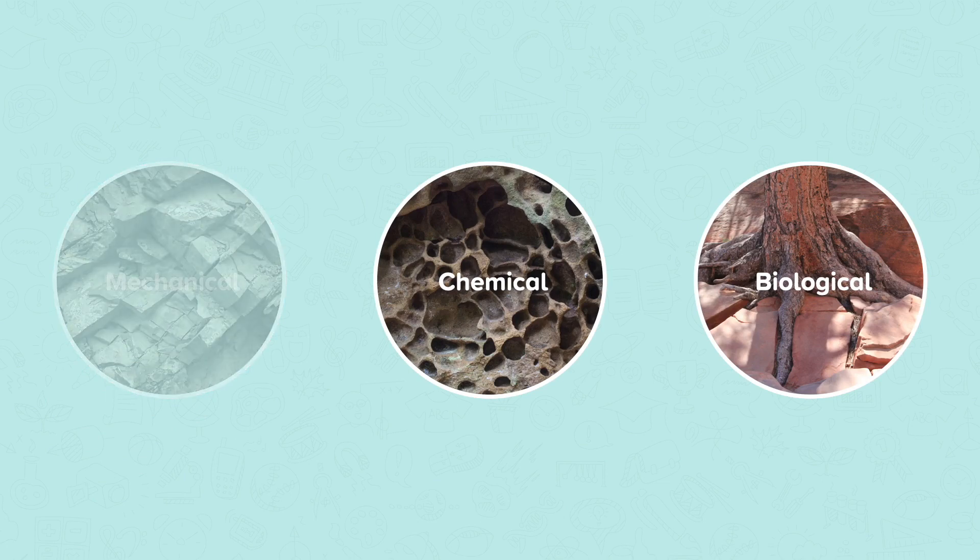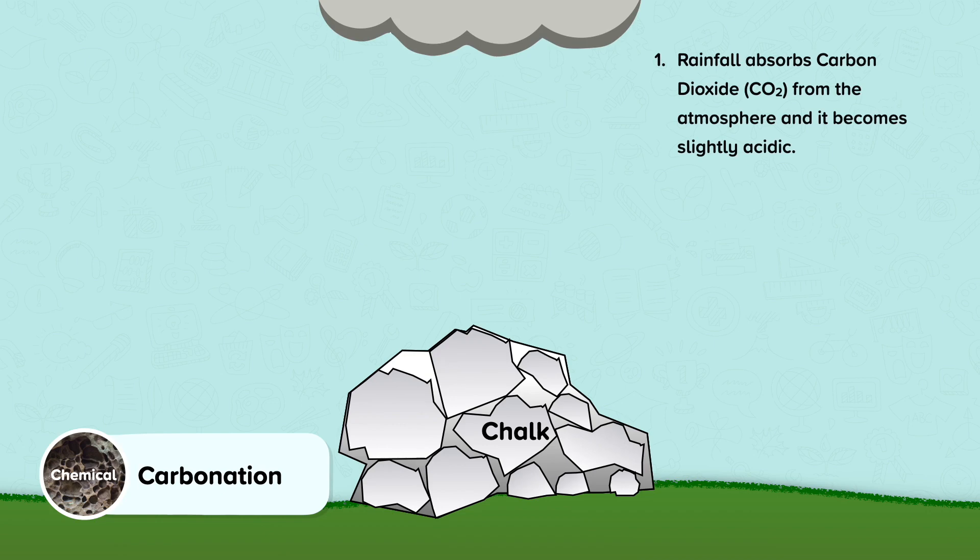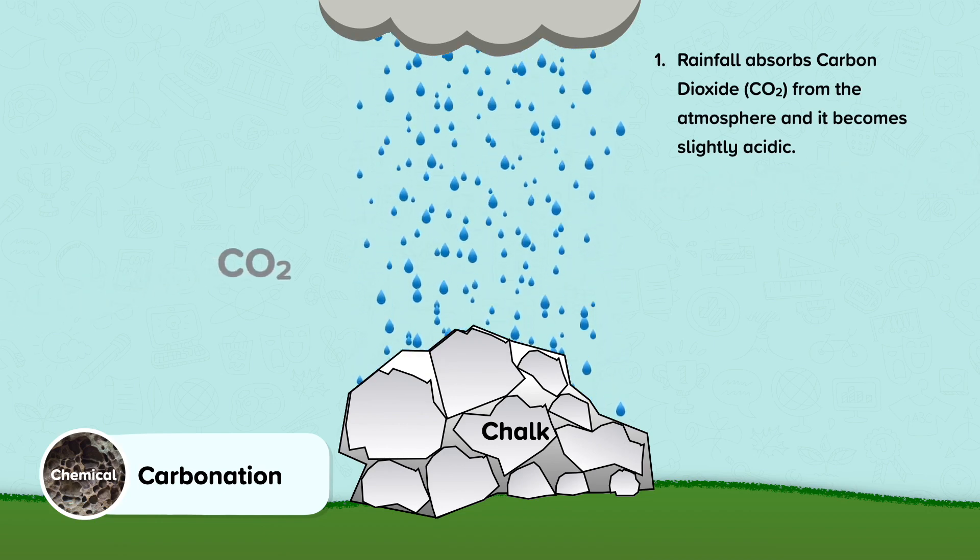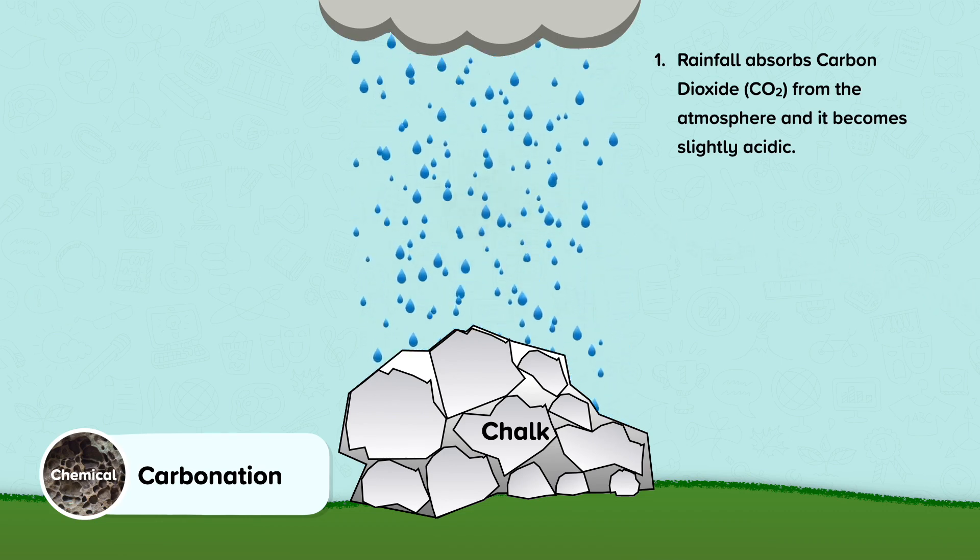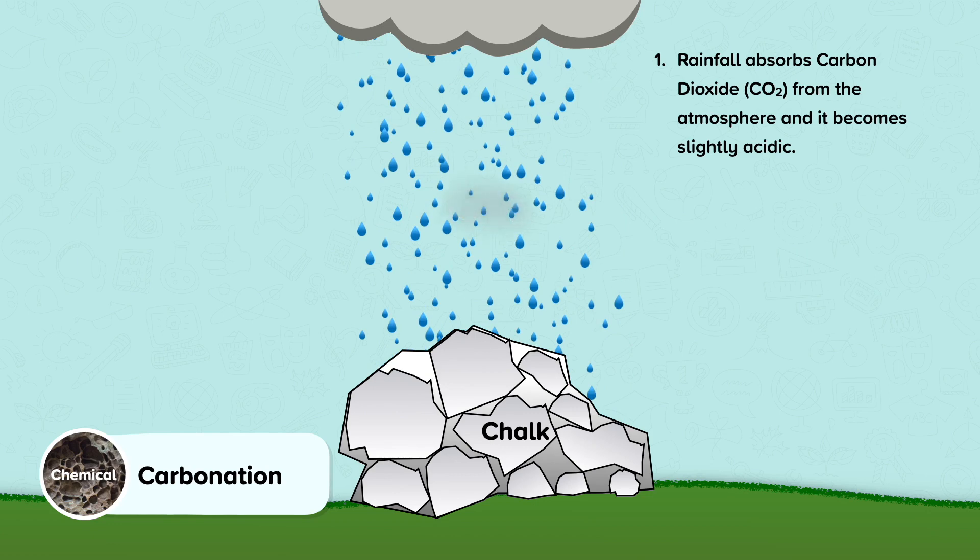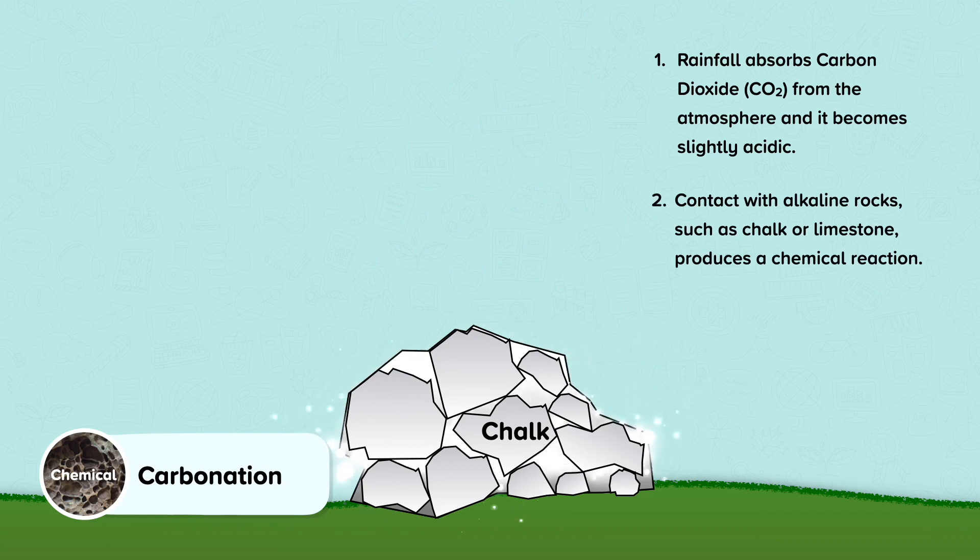Moving on to chemical weathering. Carbonation is a type of chemical weathering. Rainfall absorbs carbon dioxide or CO2 from the atmosphere and it becomes slightly acidic. Contact with alkaline rocks such as chalk or limestone produces a chemical reaction.